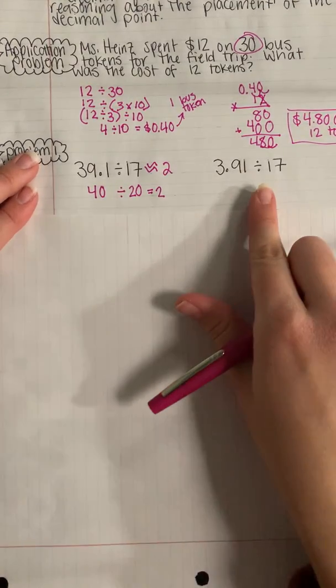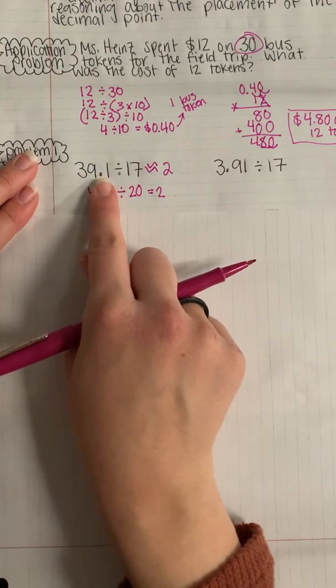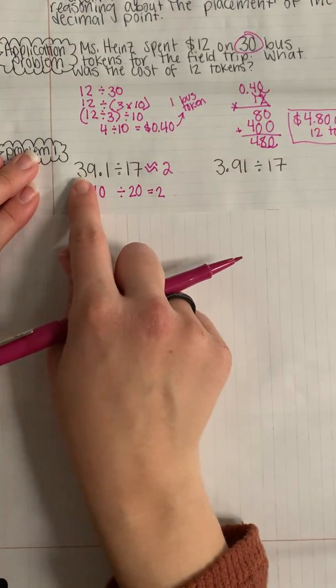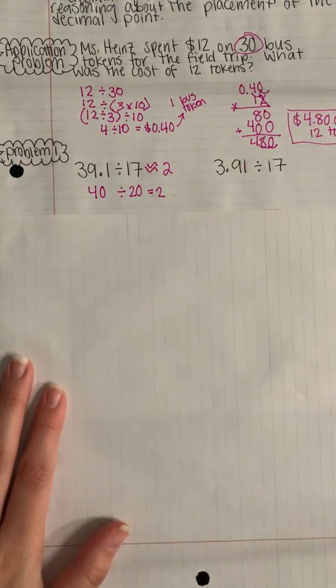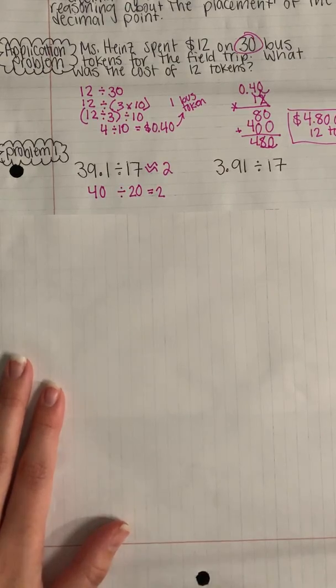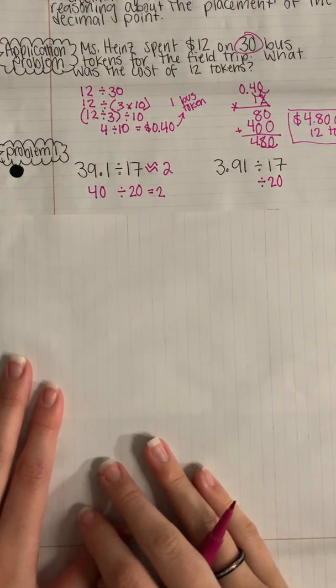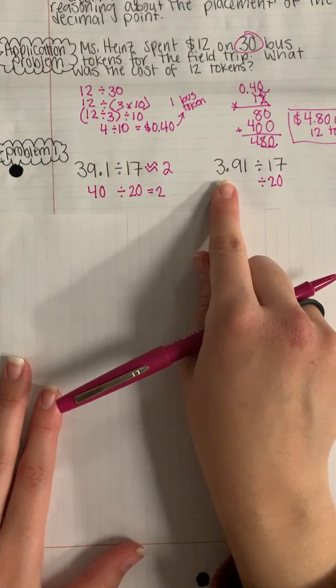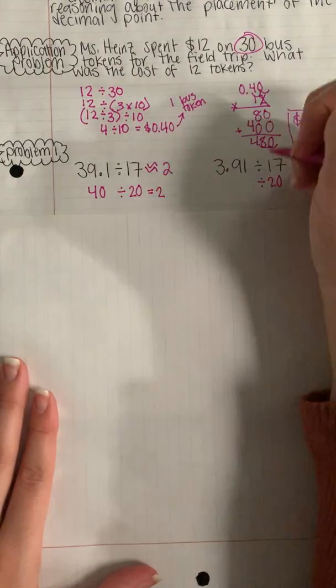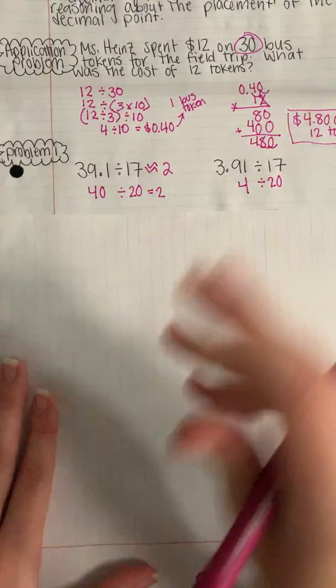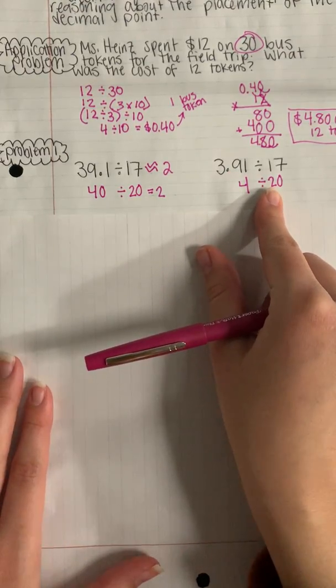Okay, so now we're going to try it with a dividend that has the same numbers as the first dividend, but the decimal point is in a different spot. Do you see, this is 39.1 and this is 3.91. So we're still going to round our divisor to 20, but now instead of rounding this to 40, that wouldn't make sense. This is like having $3.91. It would make more sense now to round this number to 4.